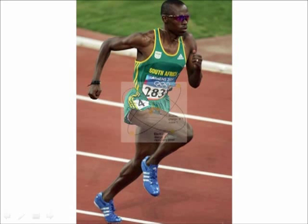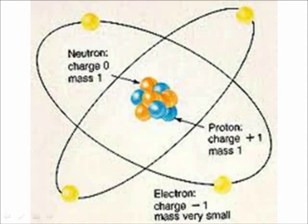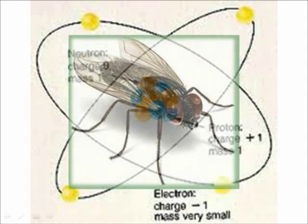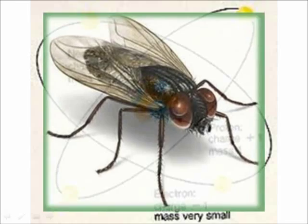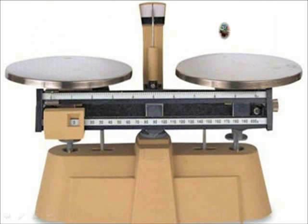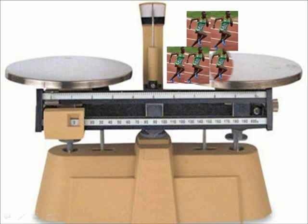A 70 kg man is composed of an astronomical number of atoms. If every atom's mass were equal to the weight of a house fly, then the weight of only 8 such men would be the same as the mass of planet Earth.